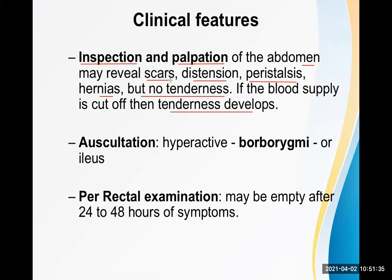If scars are present on the anterior abdominal wall, the probable cause of intestinal obstruction is post-operative adhesions. Distension can be seen by inspection. Peristaltic movement can also be visible on inspection. Hernias are easily seen, but if not visible, ask the patient to stand and cough — the cough impulse test.